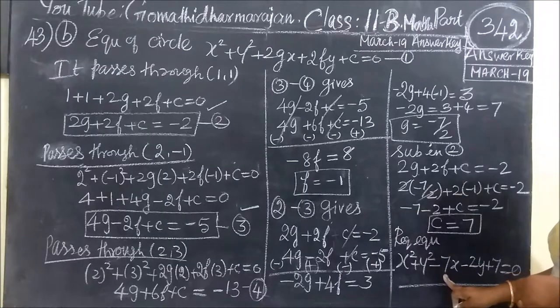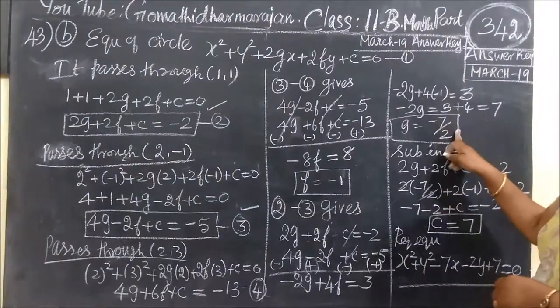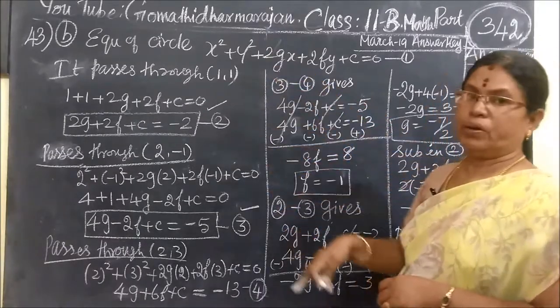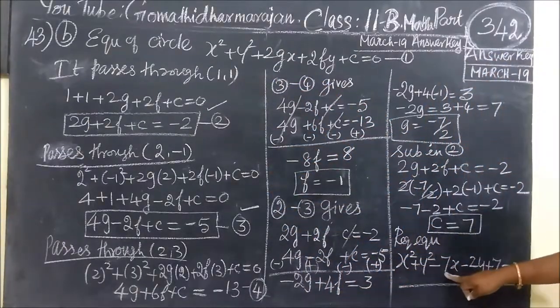Then, G equal to, you are substituting minus 7 by 2. Then, in the 2G, the 2 will cancel. So, that is minus 7.